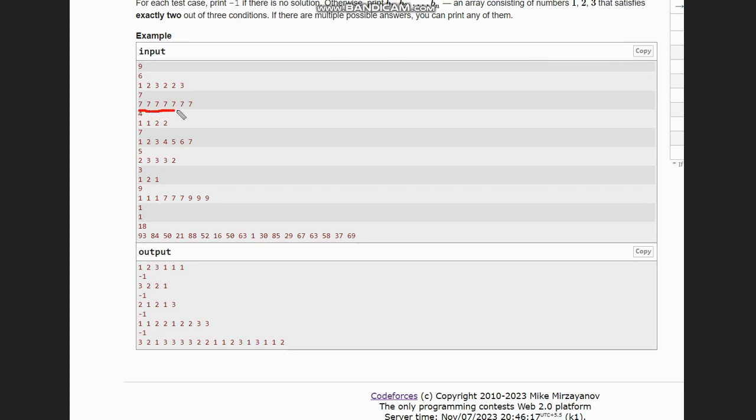seven, seven, seven - all of them are same, hence the solution is not possible. So we print minus one in this case. In case of